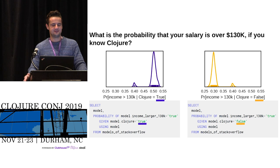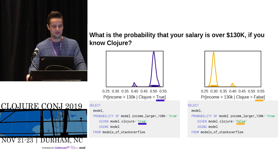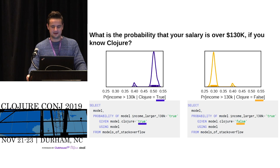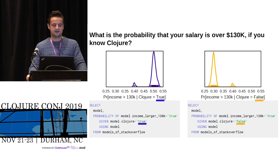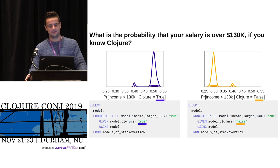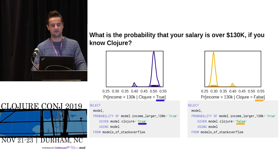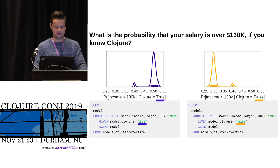Similarly, for the probability that your salary is over 130K if you know Clojure, two models treat income independently of Clojure and compute only the marginal of income being higher than 130K. All other models shift from about 0.3 to 0.5 in probability — so there is a change.